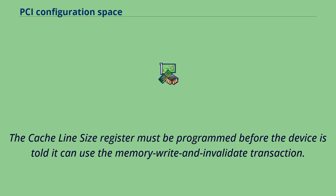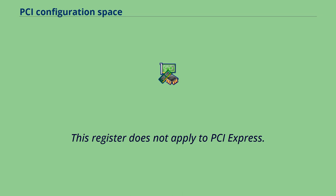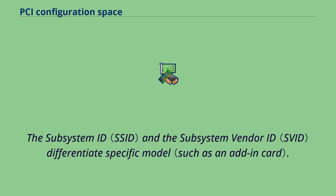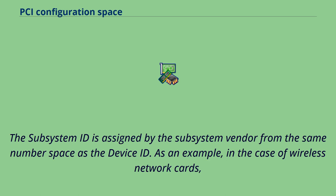The cache line size register must be programmed before the device is told it can use the memory write and invalidate transaction. This should normally match the CPU's cache line size, but the correct setting is system dependent. This register does not apply to PCI Express. The subsystem ID and subsystem vendor ID differentiate specific models. While the vendor ID is that of the chipset manufacturer, the subsystem vendor ID is that of the card manufacturer. The subsystem ID is assigned by the subsystem vendor from the same number space as the device ID.